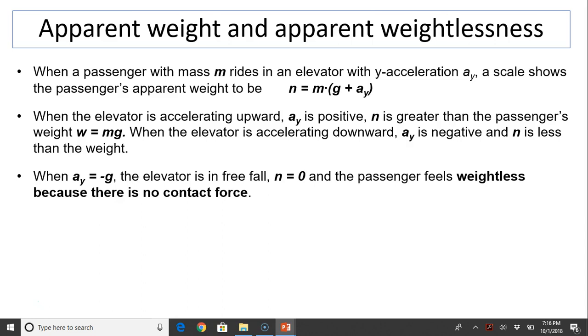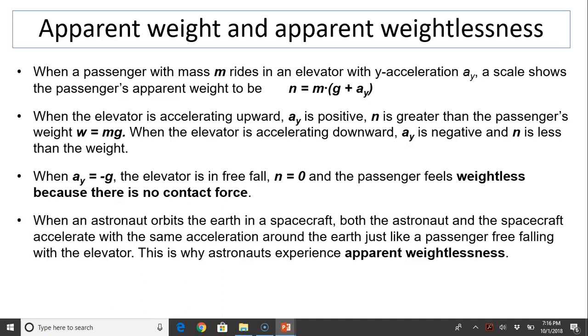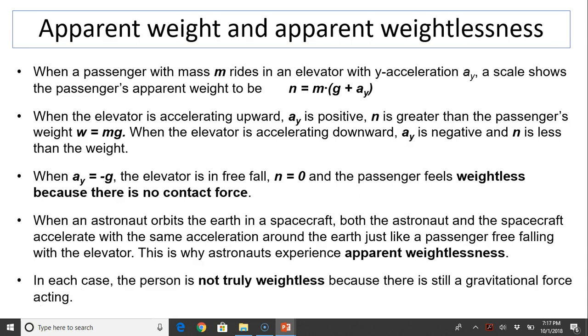When there is no contact force, you don't feel anything. You feel like you have no weight, weightlessness. When an astronaut orbits the Earth in a spacecraft, both the astronaut and spacecraft accelerate with the same acceleration around Earth or falling around Earth, just like a passenger free-falling with the elevator. This is why astronauts experience apparent weightlessness, because there is no contact force. However, in each case, in the elevator case or the astronaut case, the person is not truly weightless, because there is always a weight, weight equals mg. There is always a gravitational weight acting on the person. They just don't feel it because there is no contact force acting on it.